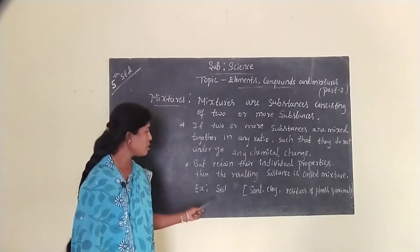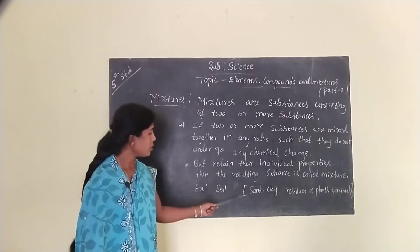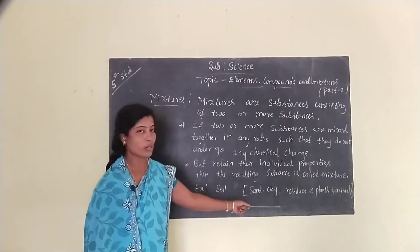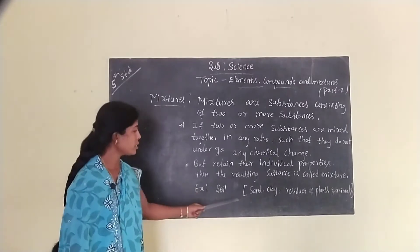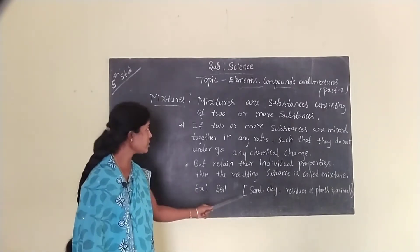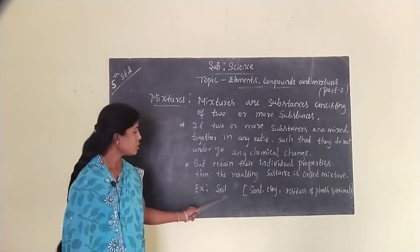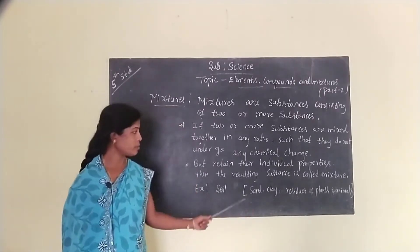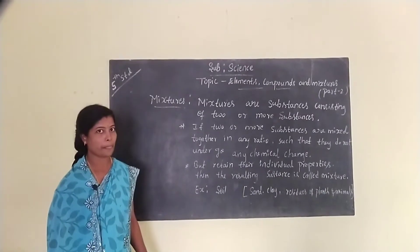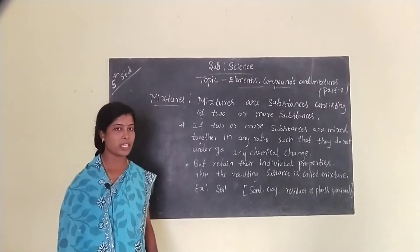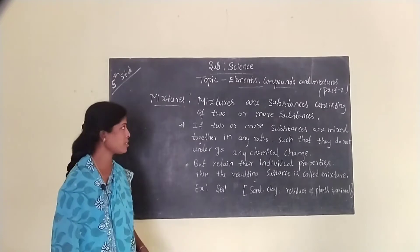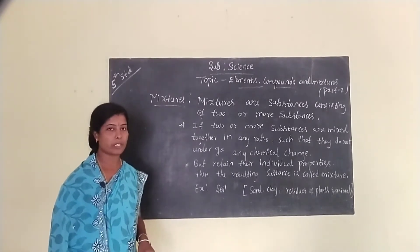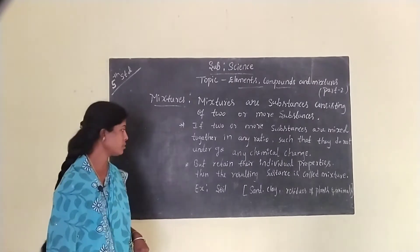Then the resulting substance is called a mixture. For example, soil is a mixture. In soil, sand, clay, and residues of plants and animals are present — we call it a mixture. Soil consists of sand, clay, and residues of plants and animals. Air is also one of the best examples of a mixture. Air is a mixture of so many gases, water vapor, and dust.